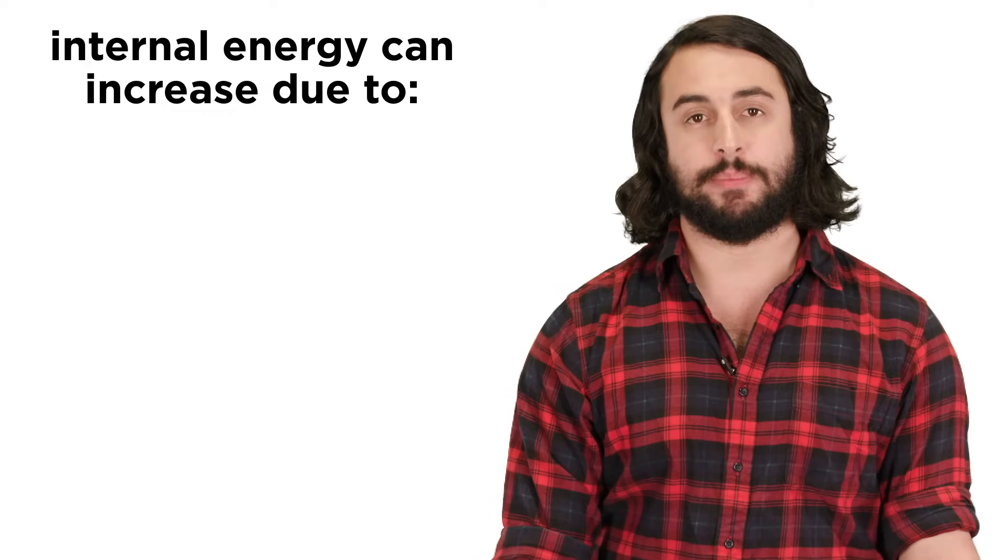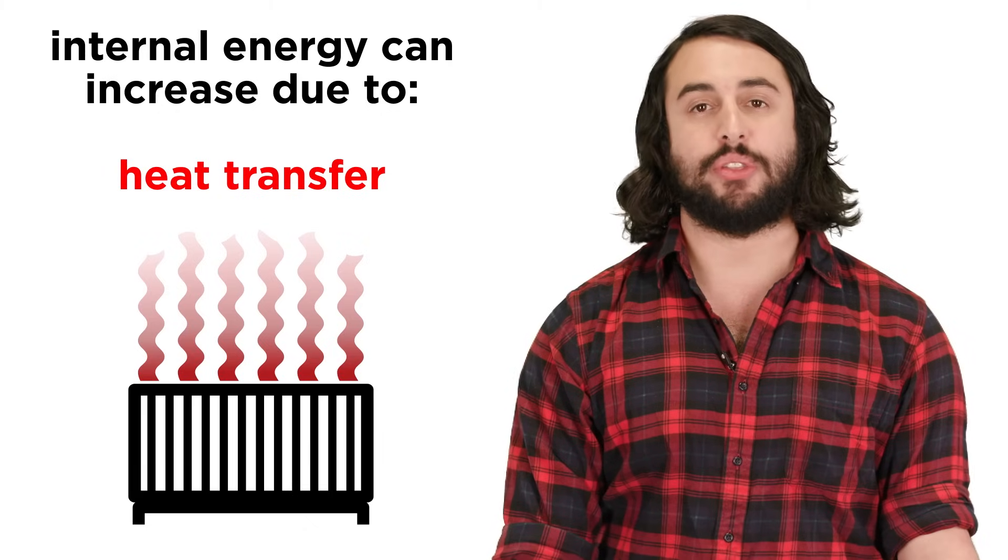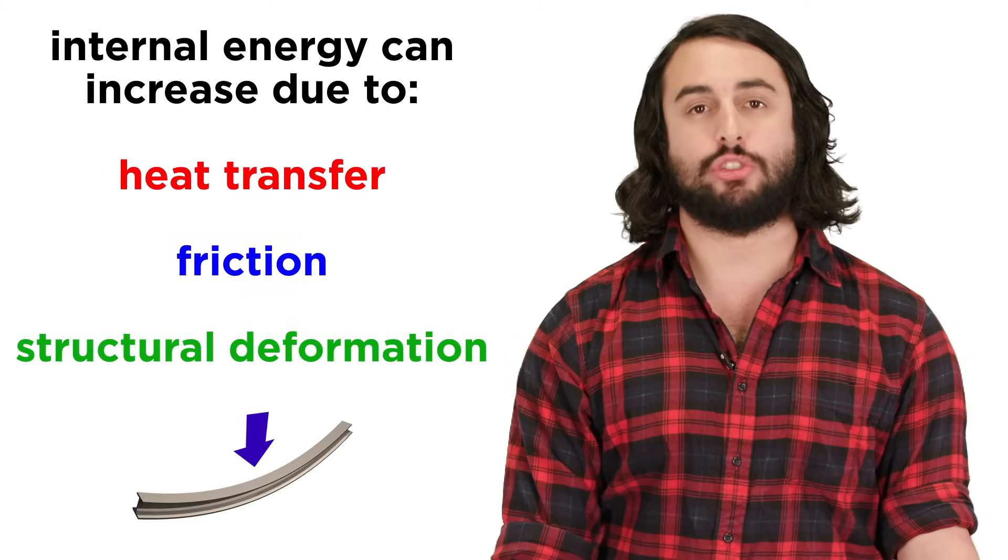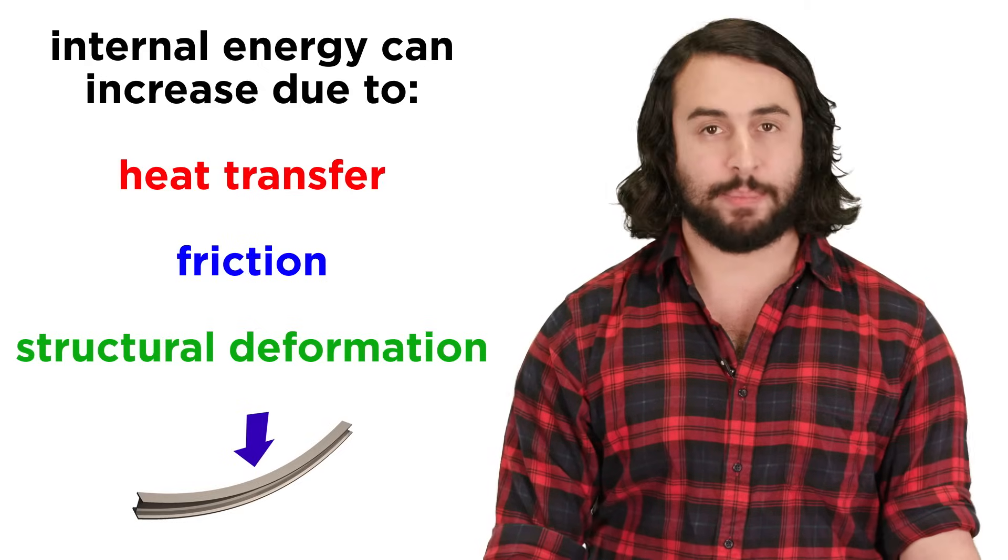The internal energy of a system can be increased due to heat transfer, but also due to things like friction or structural deformation when bending a piece of metal or stretching a rubber band.